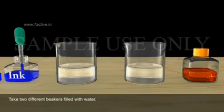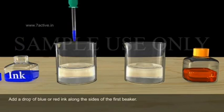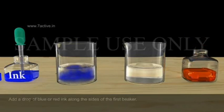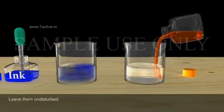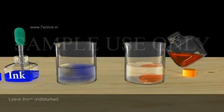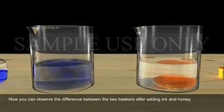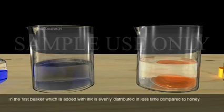Activity two, take two beakers filled with water. Add a drop of blue ink along the sides of the first beaker. Next, add a few drops of honey to second beaker. Leave them undisturbed for some time. Now you can see the difference between two beakers after adding ink and honey. In the first beaker, which is added with ink, is uniformly distributed as compared to honey.